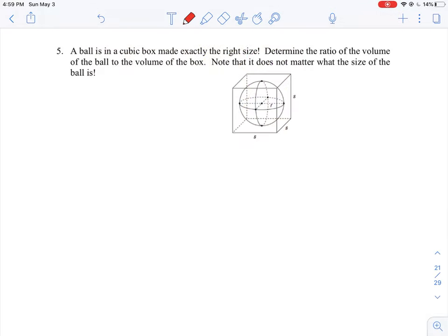Okay, so let's take a look at question number five where we're asked to find the ratio of the volume of a ball to the volume of the box. What we have is a case where the ball actually fits perfectly inside the box. It says here it does not matter what the size of the ball is, so they don't give us any numbers. We have to think about how we're going to solve it.